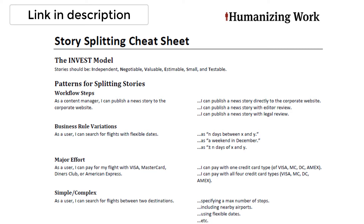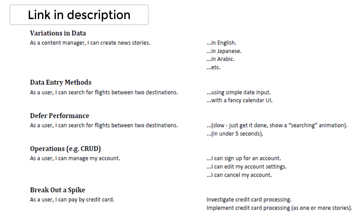The next pattern is business rule variation — for example, searching for flights with different time periods and search options based on what rule you want to use. Then there's major effort: a user paying for a flight with Visa, Mastercard, or other credit cards — a single card type may be simple to implement while others are harder. You can also split by simple vs. complex — learn from the straightforward part first, then tackle the harder bits. And you can split by variations in data, such as a news site with different languages.